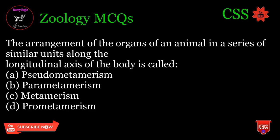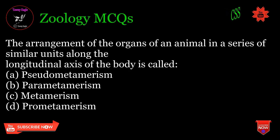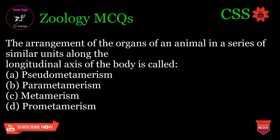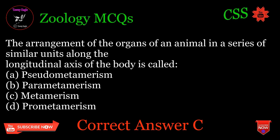The arrangement of the organs of an animal in a series of similar units along the longitudinal axis of the body is called: A. Pseudometamerism, B. Prometamerism, C. Metamerism, D. Prometamerism. Correct answer: C.